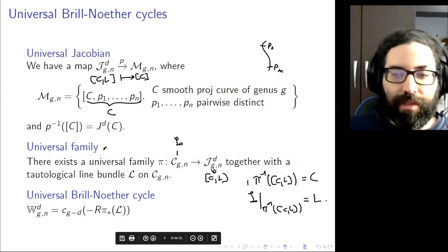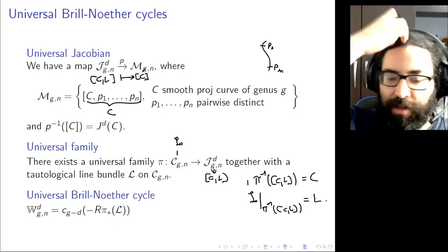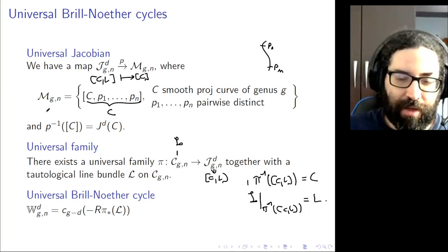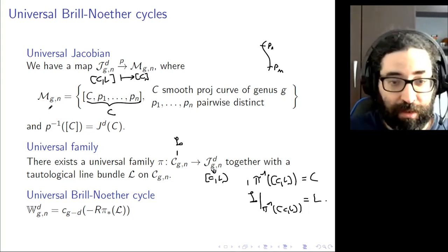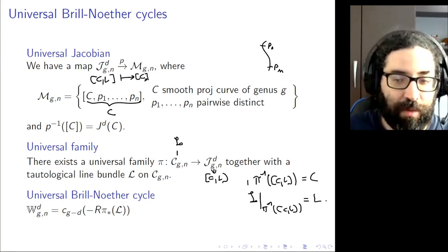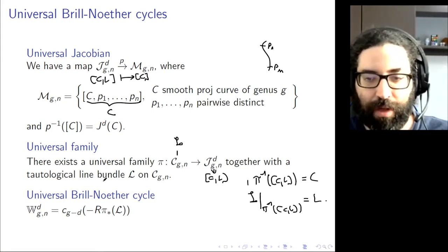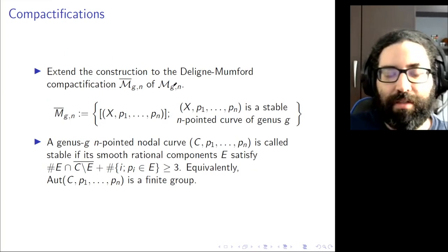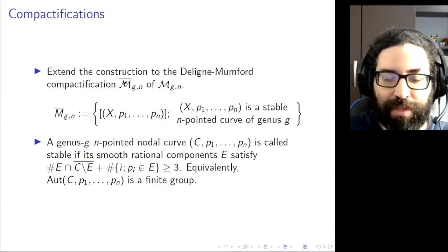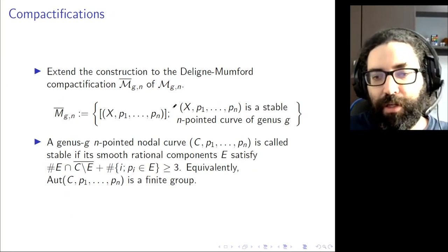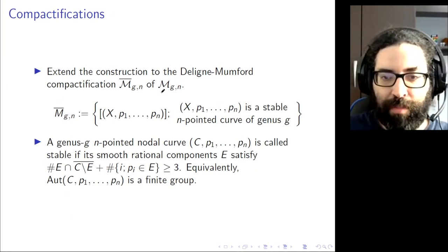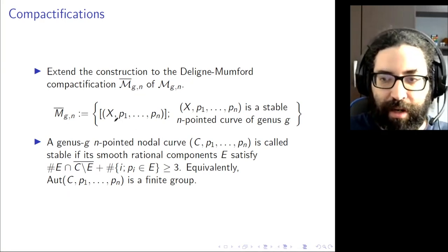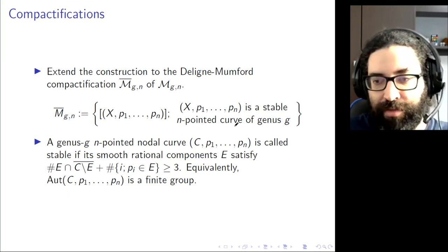Now we have the usual problem: these things are not compact. MgN is not a proper Deligne-Mumford stack because smooth curves can degenerate to singular curves. We want to extend this construction to the compactification of the moduli space. We look at M̄_{g,n}, which parametrizes stable pointed curves of genus g.